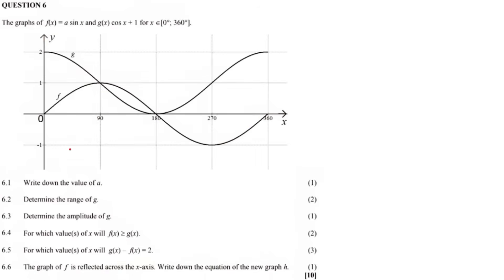Grade 10, grade 11, let us answer the following question. It says the graph of f of x is equal to sine x, and the graph of g of x is equal to cos x plus 1, for x an element of 0 degrees to 360 degrees.